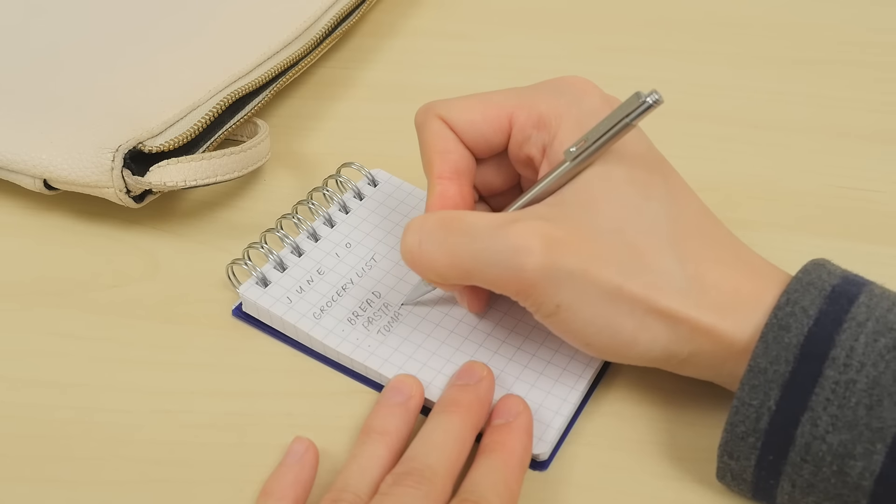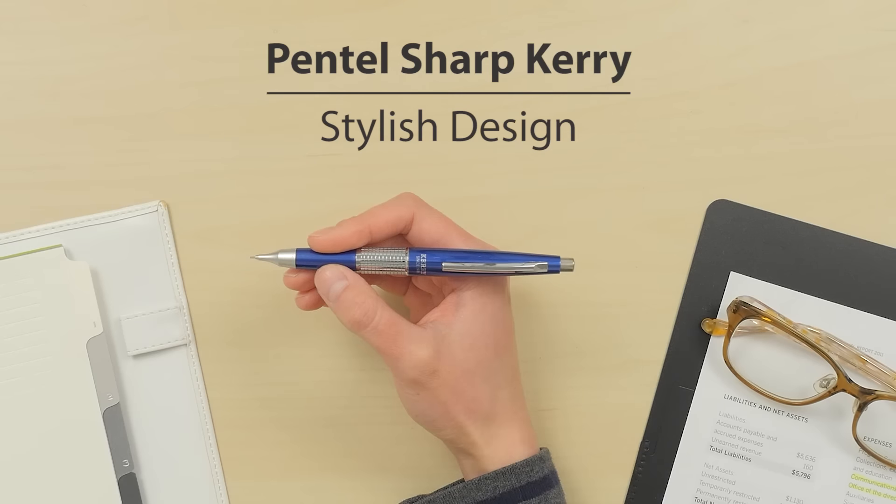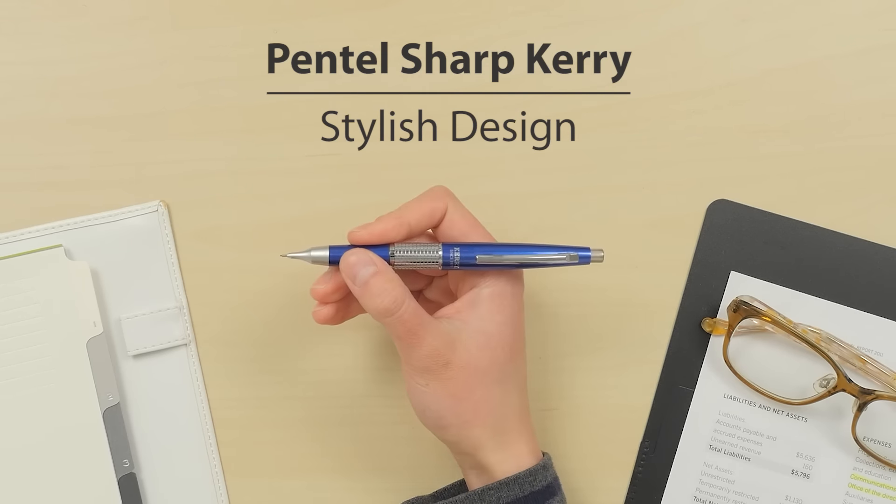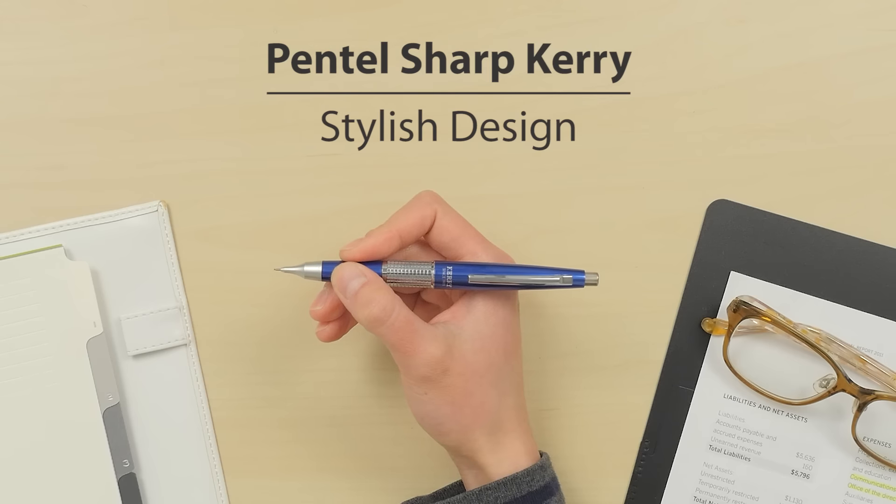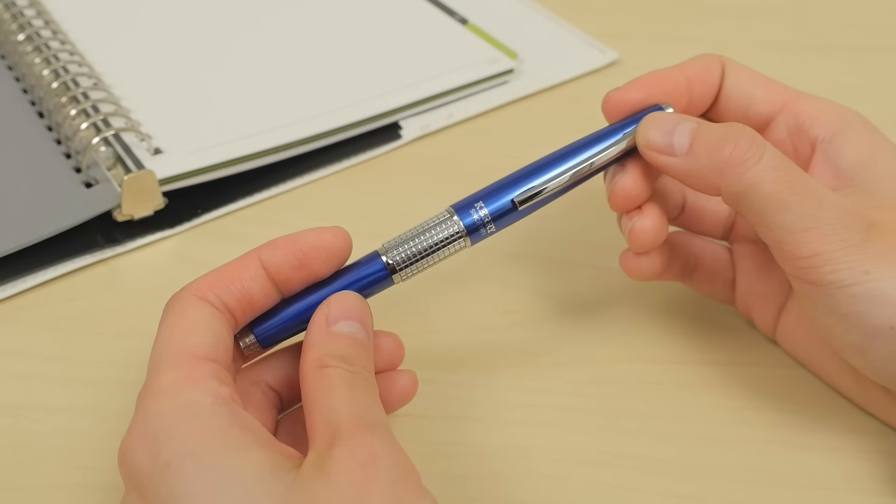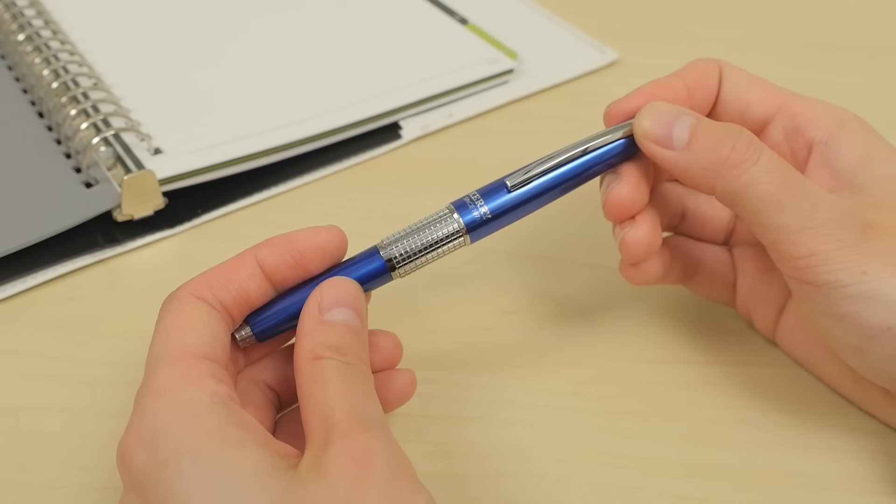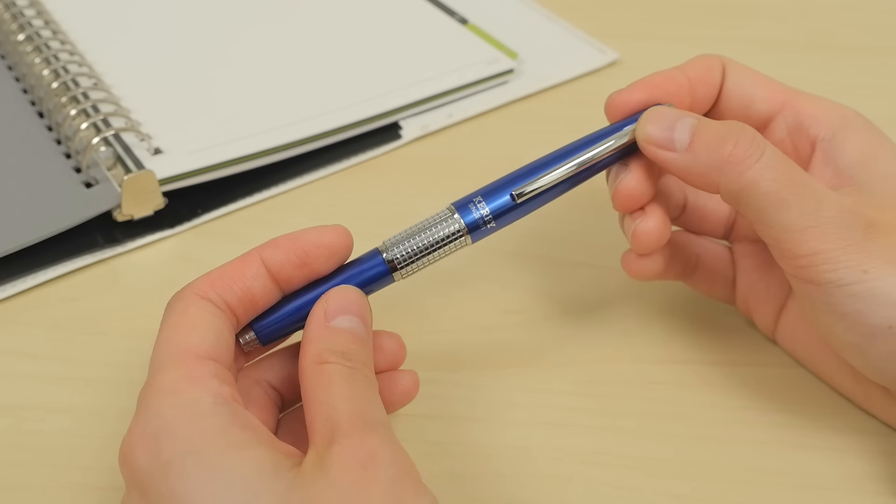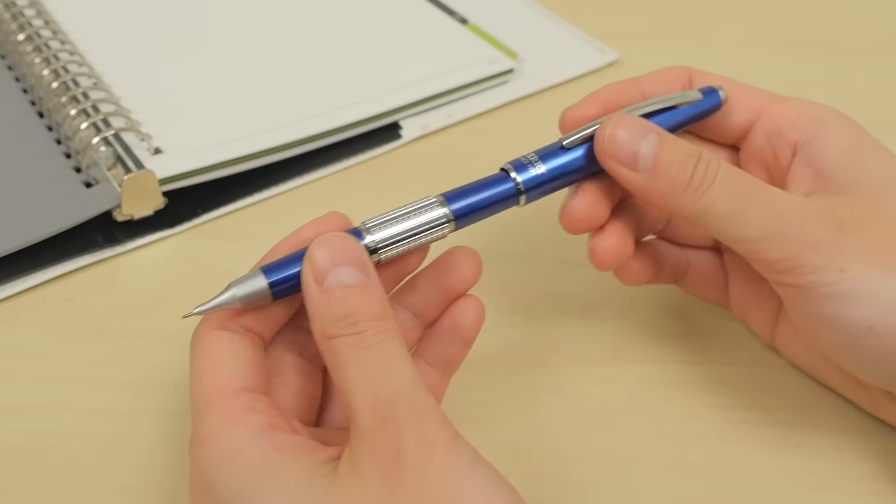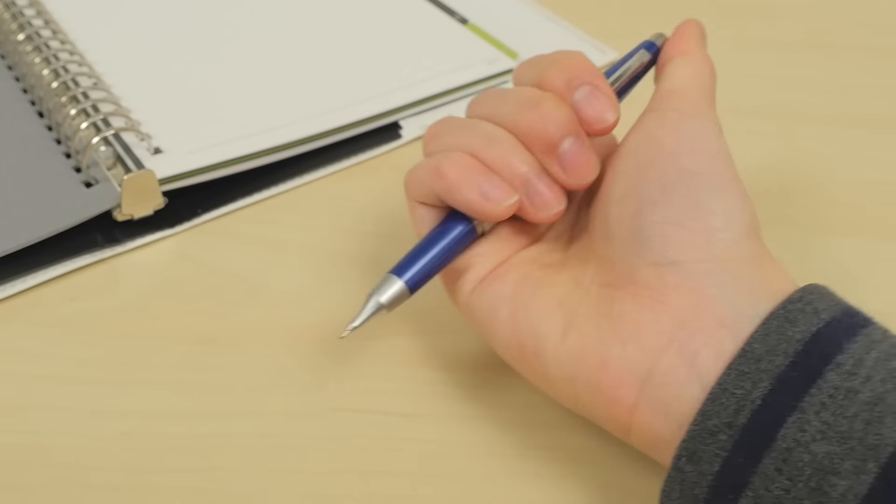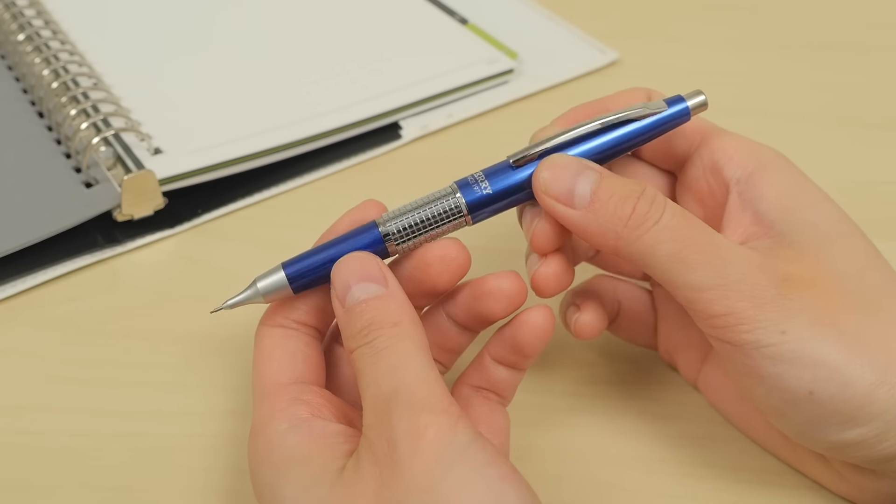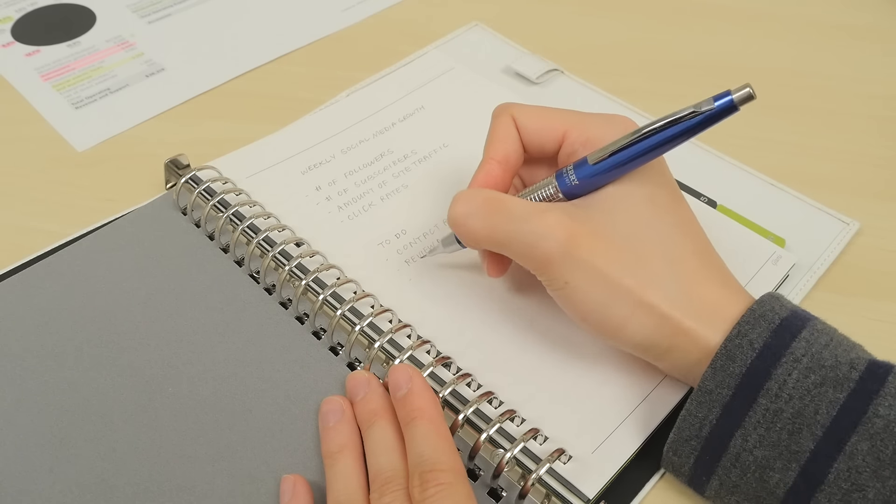Last but not least, the distinctive Pentel Sharp Kerry deserves a mention. Its sleek styling and capped design sets it apart from other mechanical pencils. At first glance, this regal pencil looks more like a fancy rollerball or fountain pen. Its capped design protects the pencil tip when not in use, and a cleverly integrated button in the cap lets you extend the lead when the cap is posted.